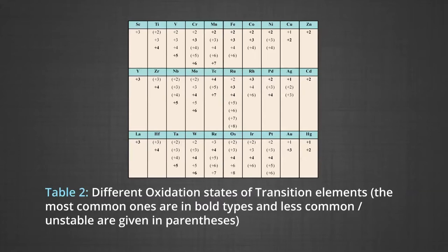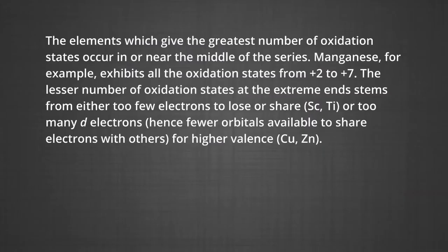The most common oxidation states are given in bold type, and the less common or unstable ones are given in parenthesis. The elements giving the greatest number of oxidation states occur near the middle of the series. Manganese, for example, exhibits all oxidation states from +2 to +7. The lesser number of oxidation states at the extreme ends stems from either too few electrons to lose or share, like scandium or titanium, or too many D electrons.